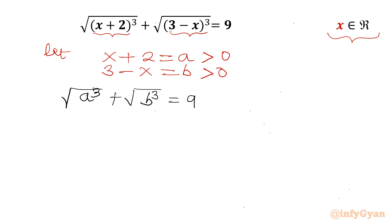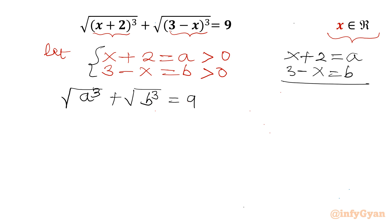Now if I add the two substitution equations — x+2=a and 3-x=b — the x terms cancel. So the left side gives 5 and the right side gives a+b. So one equation is: a + b = 5.